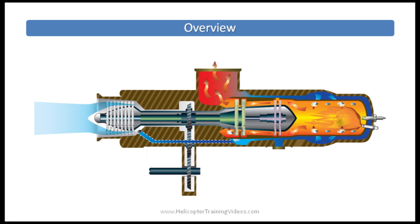Unlike piston engines, turbine combustion is continuous — there's a continuous burn going on. And unlike turbines used in airline jets, the exhaust gases in a helicopter turbine or turboshaft don't actually contribute to forward thrust as they do in an airline jet.